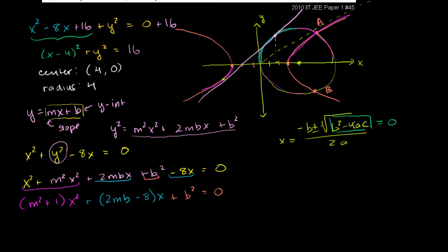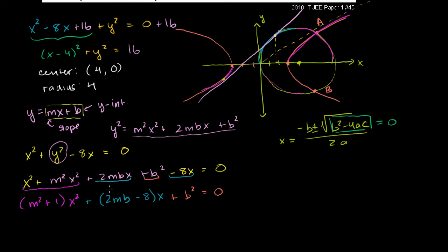So when a line is tangent to a circle, it can only intersect in one point, meaning this will only have one solution. If it's a non-tangent line, it would either have two solutions, in which case the discriminant is positive, or it won't intersect at all, in which case b squared minus 4ac would be negative. So we know that this is a tangent line, so b squared minus 4ac equals 0.